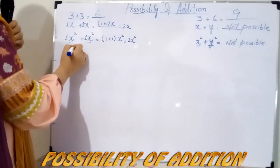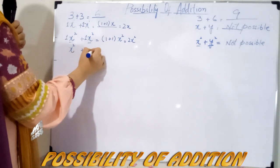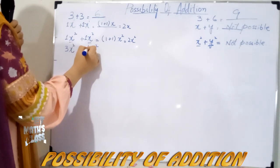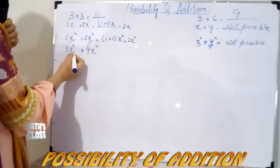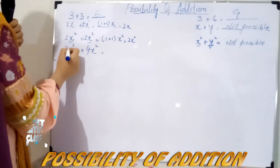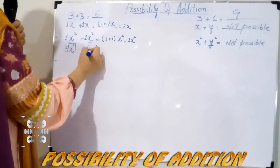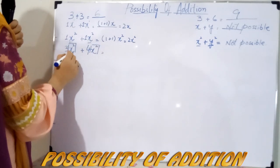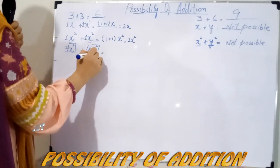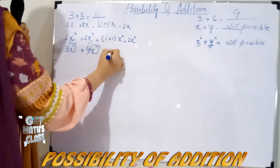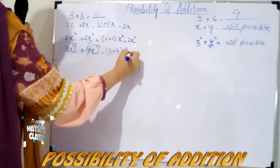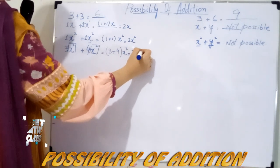Addition between the same variable but with some coefficient — for example, 3x square and 4x square. The addition is 3x square plus 4x square. Because the variable part is the same — x and x — and the powers are also the same, simply add their coefficients: 3 plus 4, and the variable part remains the same. The result is 7x square.